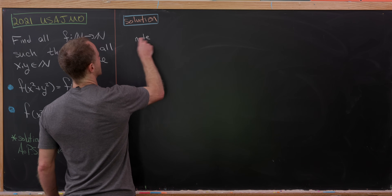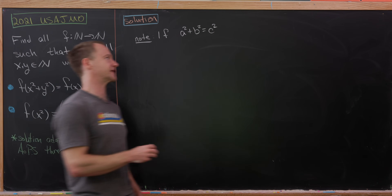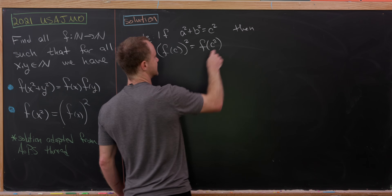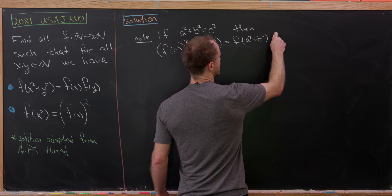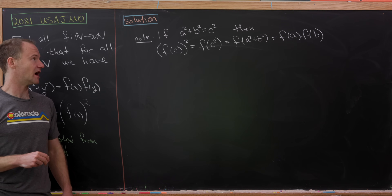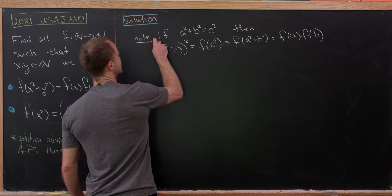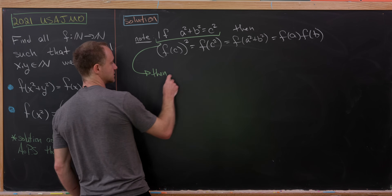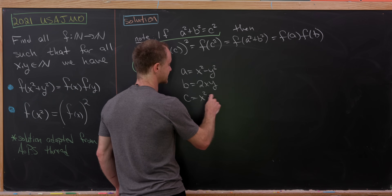Now we're ready to launch into the solution. If a² + b² = c² — i.e., a, b, c are a Pythagorean triple — then f(c)² = f(c²) = f(a² + b²) = f(a)·f(b). We'll also use the well-known parametrization of Pythagorean triples: a = x² − y², b = 2xy, c = x² + y², valid for natural numbers x > y.